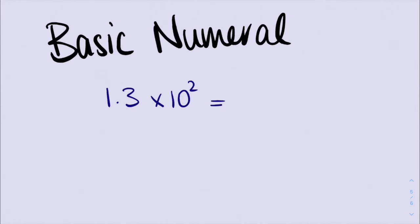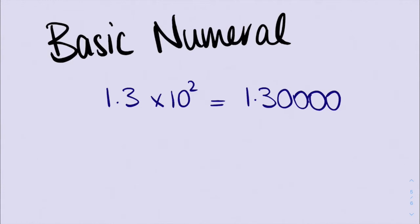So this example that I already have here — if we were to turn this into a basic numeral, what I would do is take my 1.3 and add a couple of extra zeros on the end so I can move my decimal place. I can do that because this is a positive number up the top. If it was a negative number — so our 10 was to the power of negative 2 — I would put my zeros out the front so I can move my decimal place in the opposite direction.